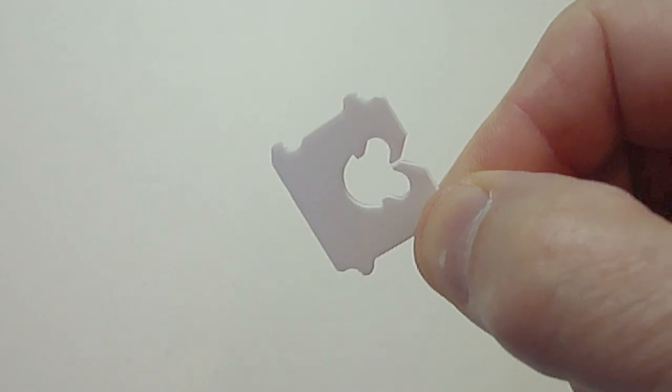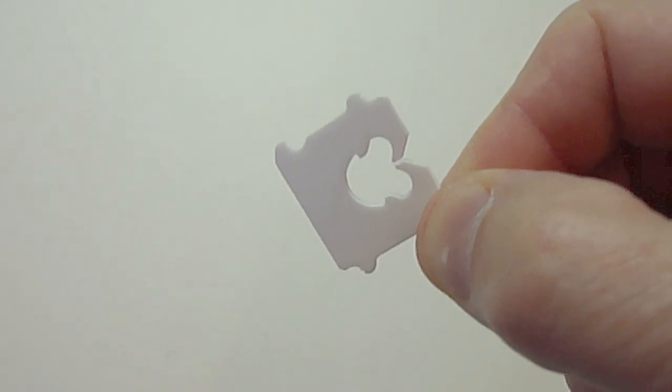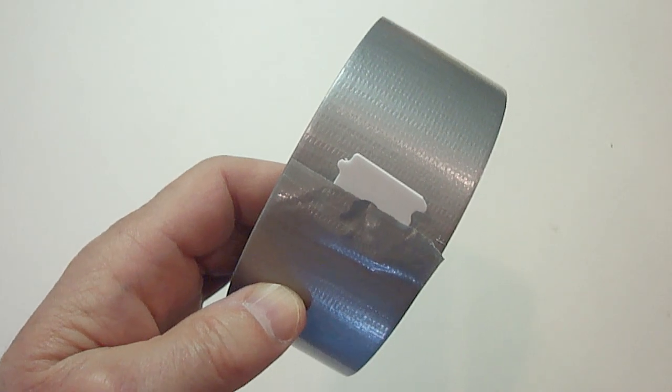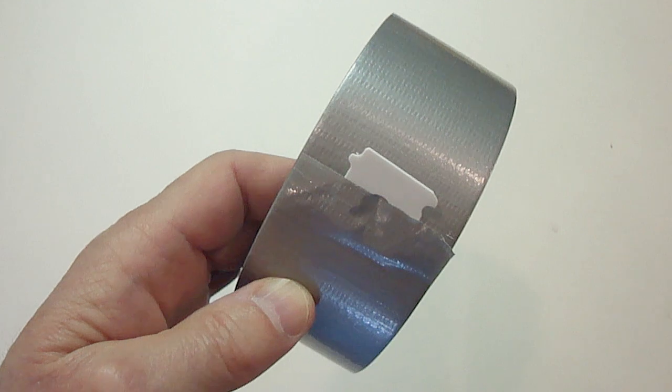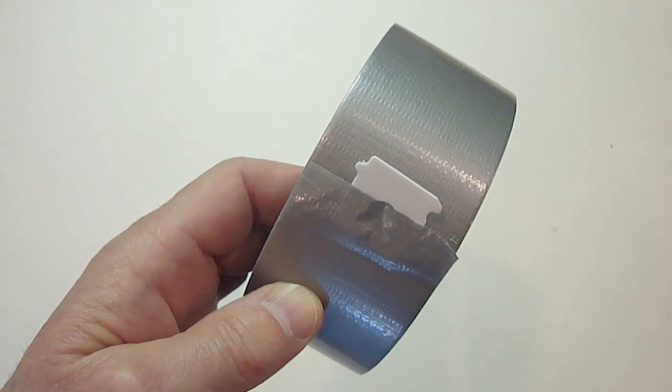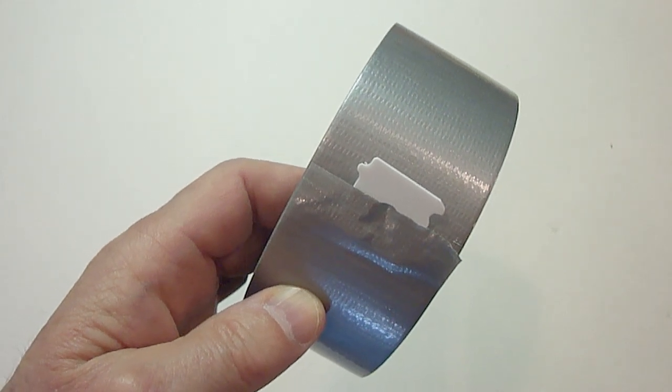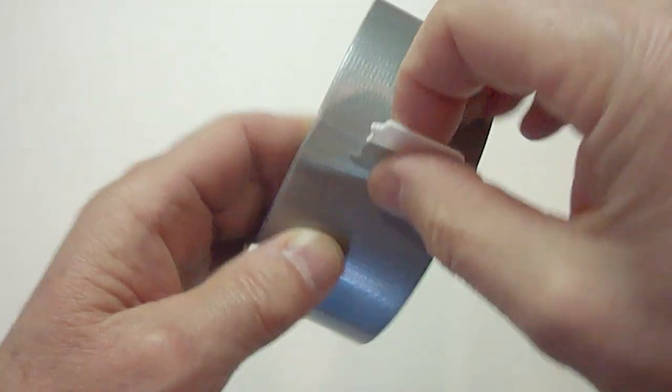The first way is to use one of these plastic clips that they use to seal a loaf of bread. When you're done using the tape, just stick half of the clip on the end of the sticky side of the tape. If you do this, the end of the tape will never get stuck again. When you need to use the tape again, just remove the clip.